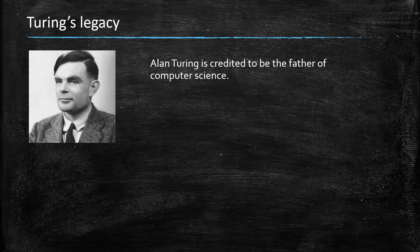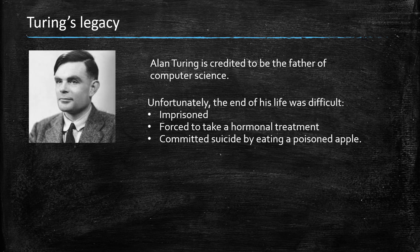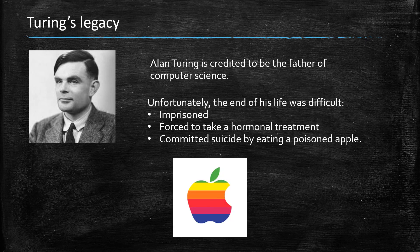Now that Imitation Game movie is about Turing. I just wanted to conclude by the fact that due to this and many other contributions, he's credited to be one of the founders of computer science. At the end of his life, he faced a lot of difficulties. He was imprisoned, forced to take hormone treatment, and ultimately committed suicide by eating a poisoned apple.